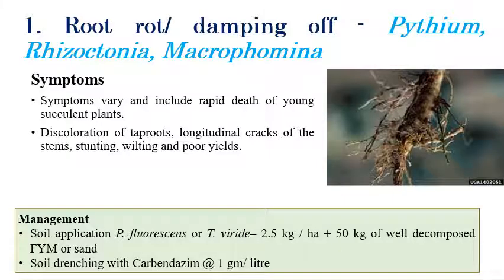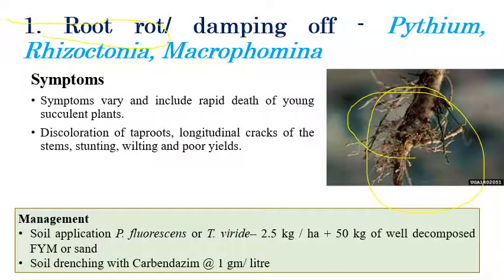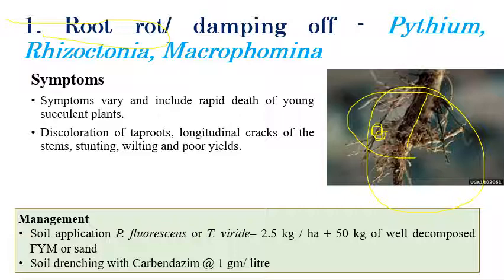The first disease is root rot or damping off, which is caused by Pythium, Rhizoctonia, or Macrophomina species. On the right side we can clearly see the symptoms. The name itself indicates rotting of roots. We can see the root and stem region nearby the root. Rapid death of young plants can be seen, along with discoloration of tap roots. If we cut open the root, we can clearly see black color discoloration of the vascular bundles. Due to root rot or damping off, the height of the plant can be reduced, which is called stunting, and wilting and poor yield can also be observed.